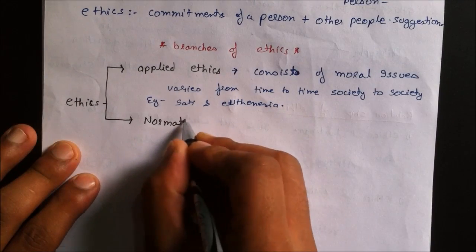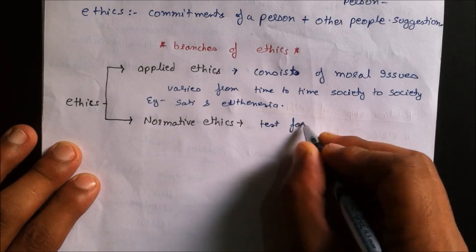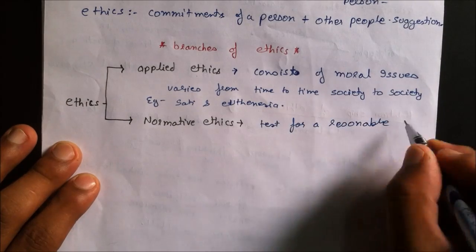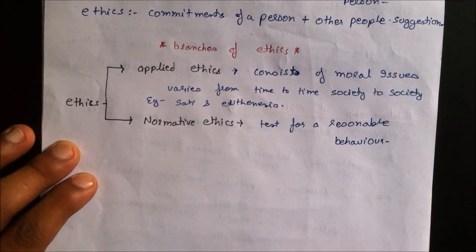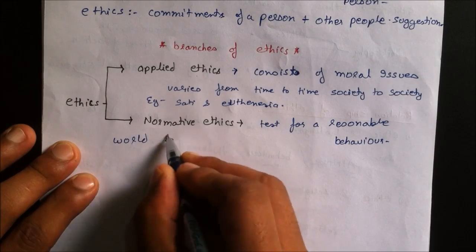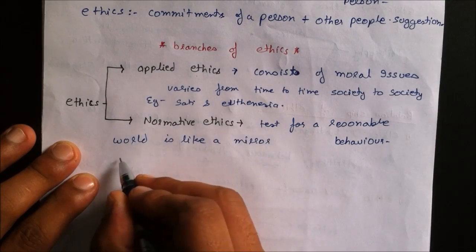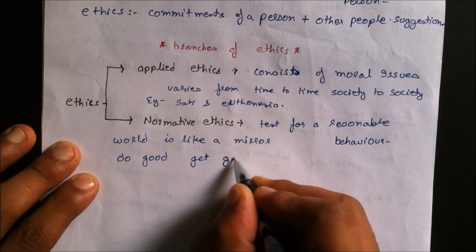The second branch is Normative Ethics. Normative Ethics is a test for reasonable behaviour. It considers the world like a mirror — if you do good to some other person, the good will come back to you.